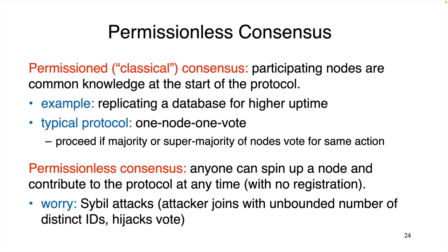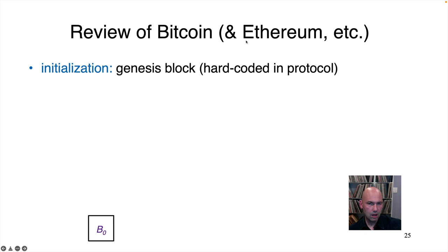Now that we've established that Bitcoin is a very interesting SMR protocol — being the first ever to achieve consistency and liveness under reasonable conditions in the permissionless setting — let's review how Bitcoin and other similar protocols actually work. For our purposes, two properties of Bitcoin will be important: first, that it achieves Sybil resistance through something known as proof of work, and secondly, that it decides on which transactions have been confirmed through something known as the longest chain rule. Bitcoin is not the unique protocol with these properties — Ethereum, at least pre-merge, also had these same properties.